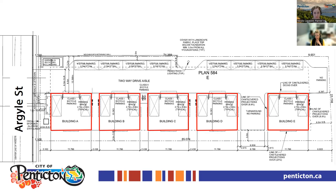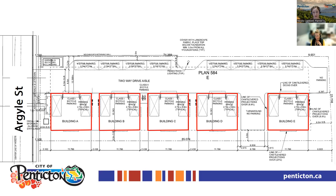A question from Mark: if there is currently no crosswalk across Argyle at Eckert and the angled corner is already dangerous to cross, is there any consideration for pedestrian traffic with the extra vehicle traffic from this proposal? The applications are reviewed by our development engineering department. We would need to confirm whether this was reviewed and can bring that item forward to them to assess whether additional pedestrian crossings are warranted and whether it is safe to add one at that location.